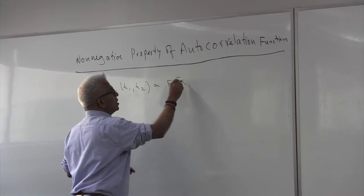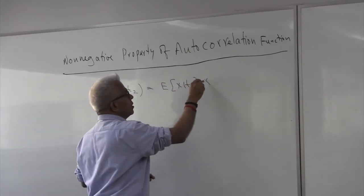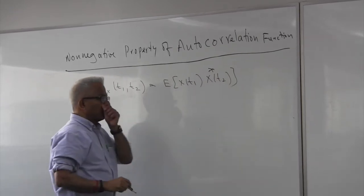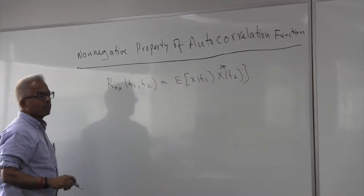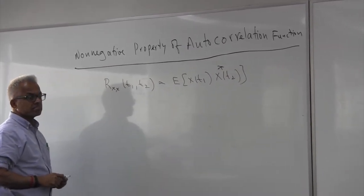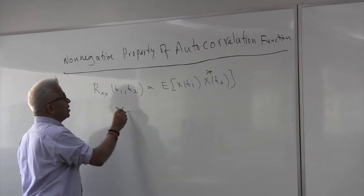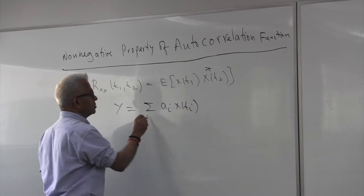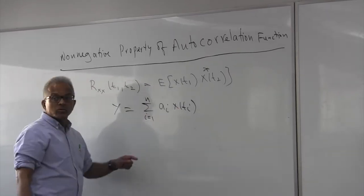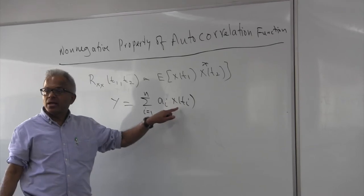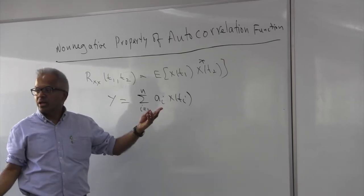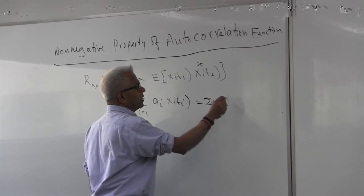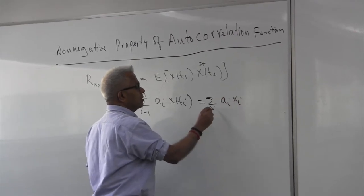Expected value of X(t1), X(t2) star. Let me define a bunch of average values of these random variables. Look at what I'm doing. X(Ti) of course are random variables, so I can write this as sigma i. I'm just taking an average of these.